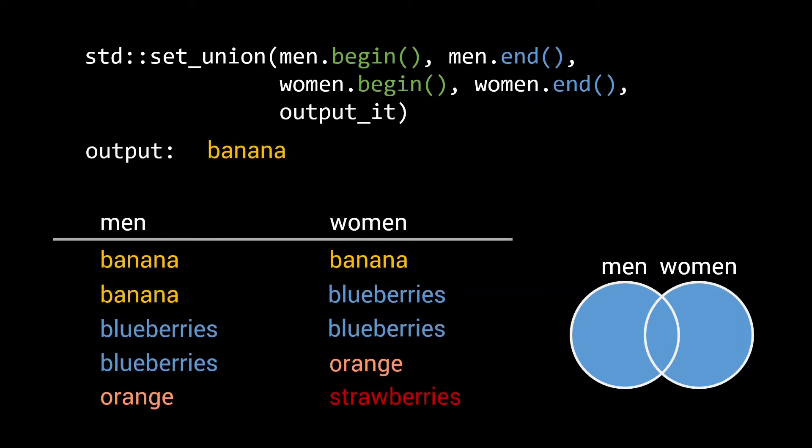we have one banana element that is present in both sets, one banana only in the men set, two blueberries present in both sets, one orange in both, and one strawberries picked by only the women. Hence the total number of elements in the union of these two sets is 6, not 10.